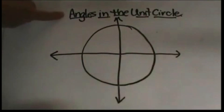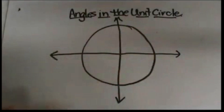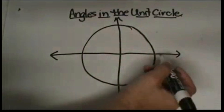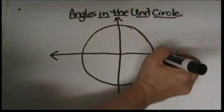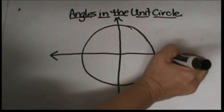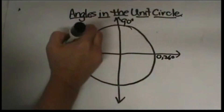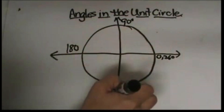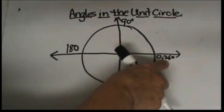Today we're going to look at the angles in the unit circle. We're going to start off with a basic unit circle where the radius is 1 and we're going to label our angles. The four main spokes are 0/360, and then coming up 90 degrees, 180, 270, and then back around to the beginning which is 360 degrees.